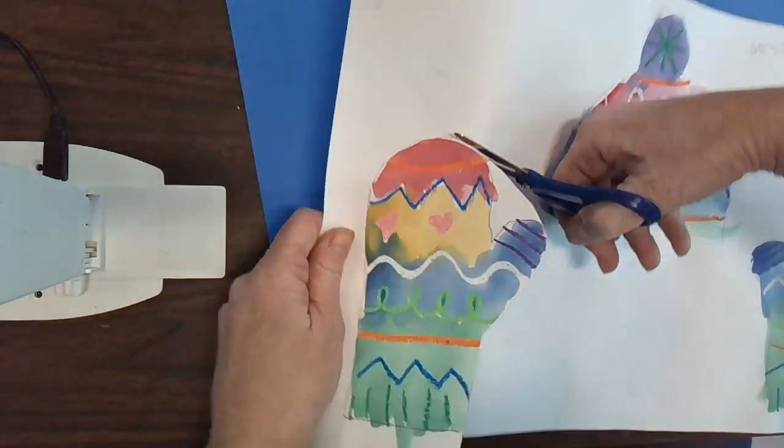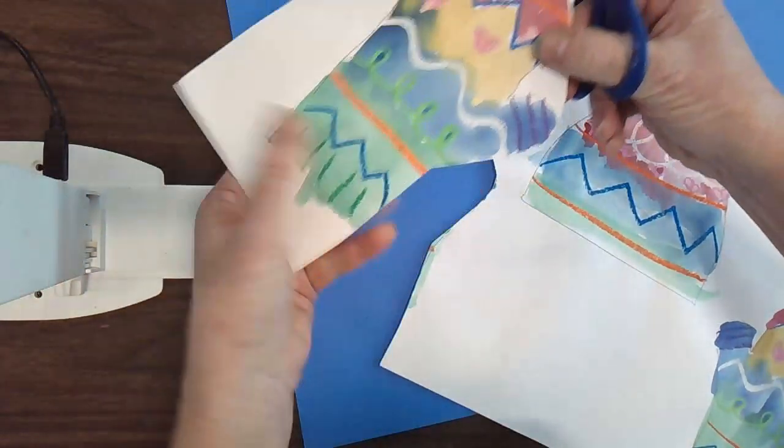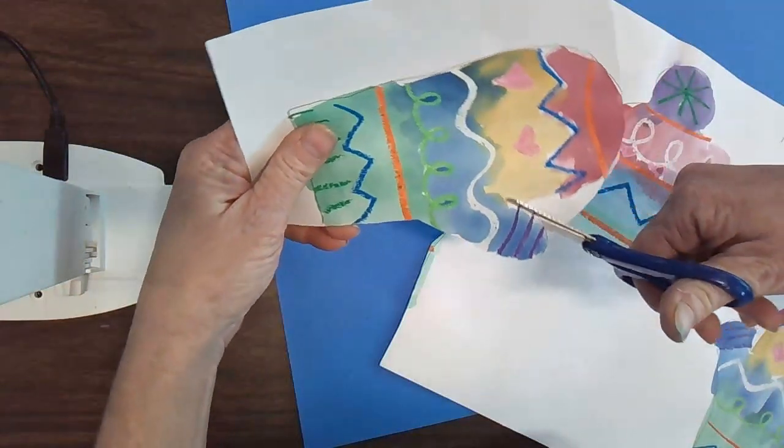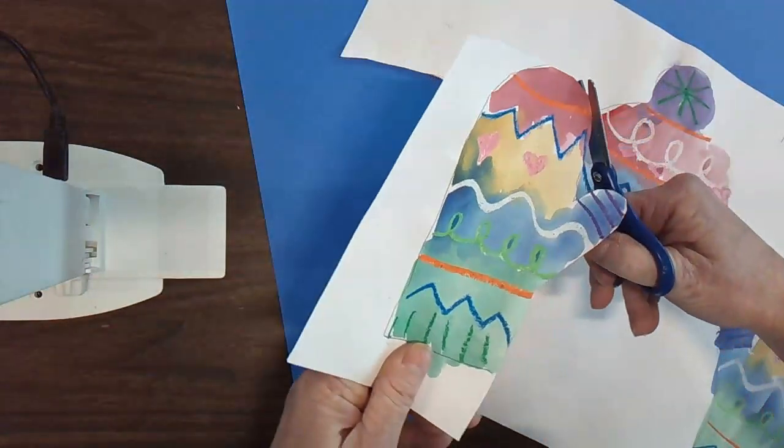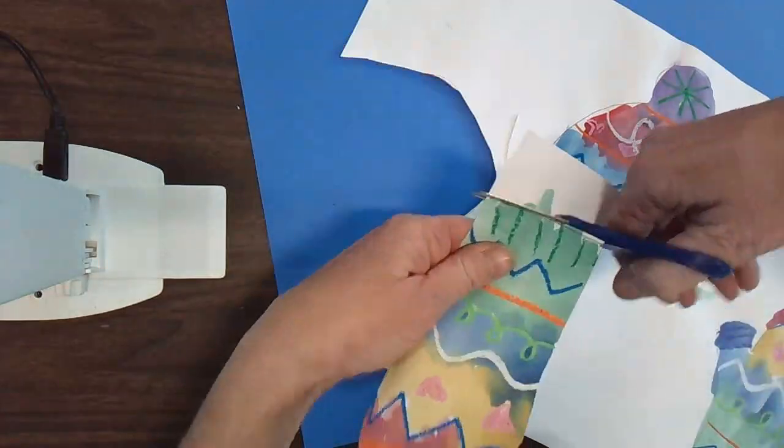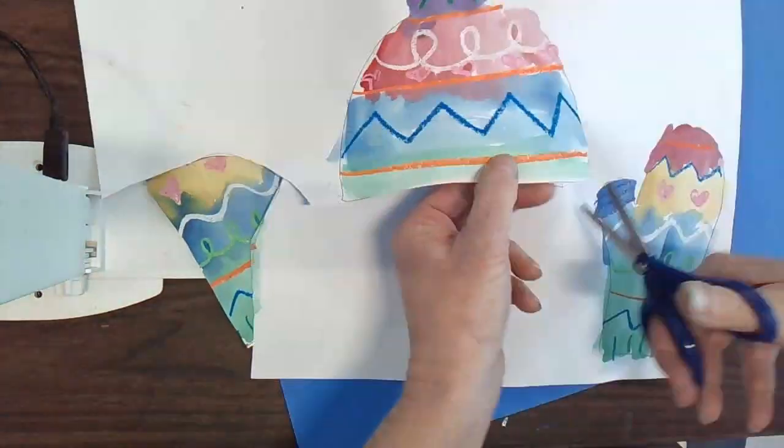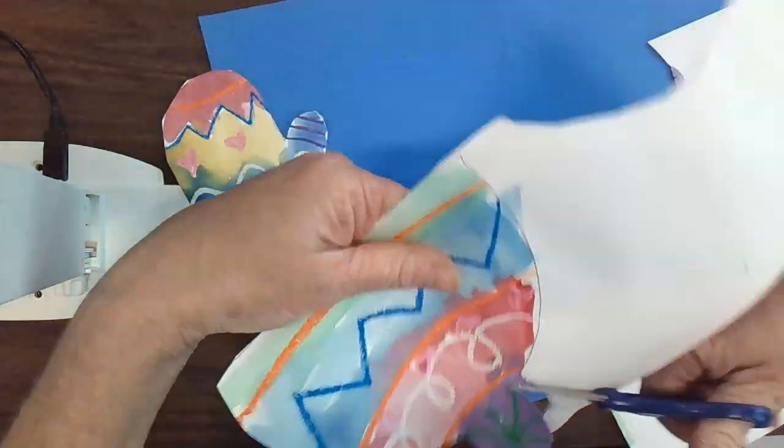You're going to cut carefully around your mittens. If it's easier to cut it off onto a smaller piece and then cut around it you can do that, but you want to carefully cut all the way around both mittens and your hat.